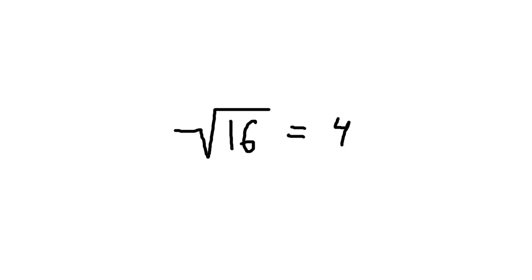But remember something. If you multiply two negative numbers together, you get a positive number. So the answer is also negative 4, since negative 4 multiplied by itself is 16.